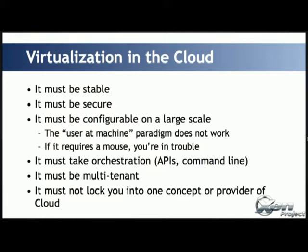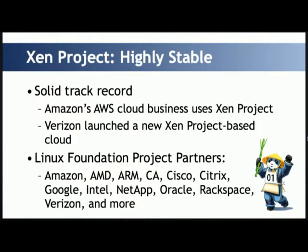It must be multi-tenant, so you may have a cloud like Amazon running multiple guests from different companies at the same time. And we don't want to be tied to one provider or one concept — we let the cloud provider decide what they want to do. Xen project is used by Amazon AWS. There is also a new project started by Verizon to build a cloud based on Xen. We have many partners in the Linux Foundation such as Amazon, AMD, ARM, Cisco, Citrix, Google, Intel, NetApp, and others.